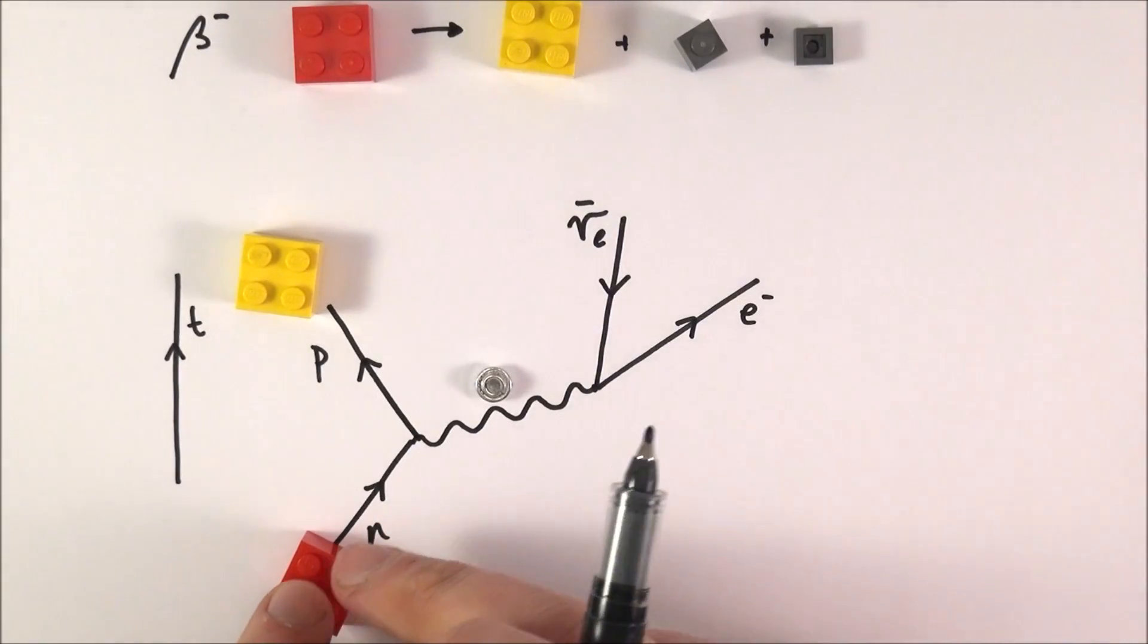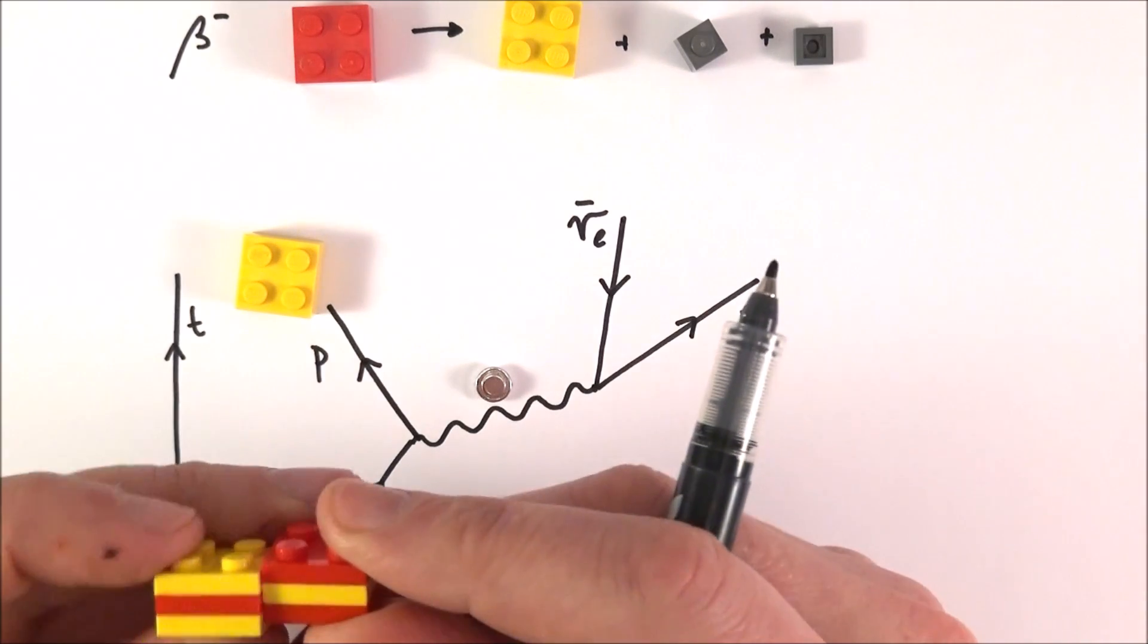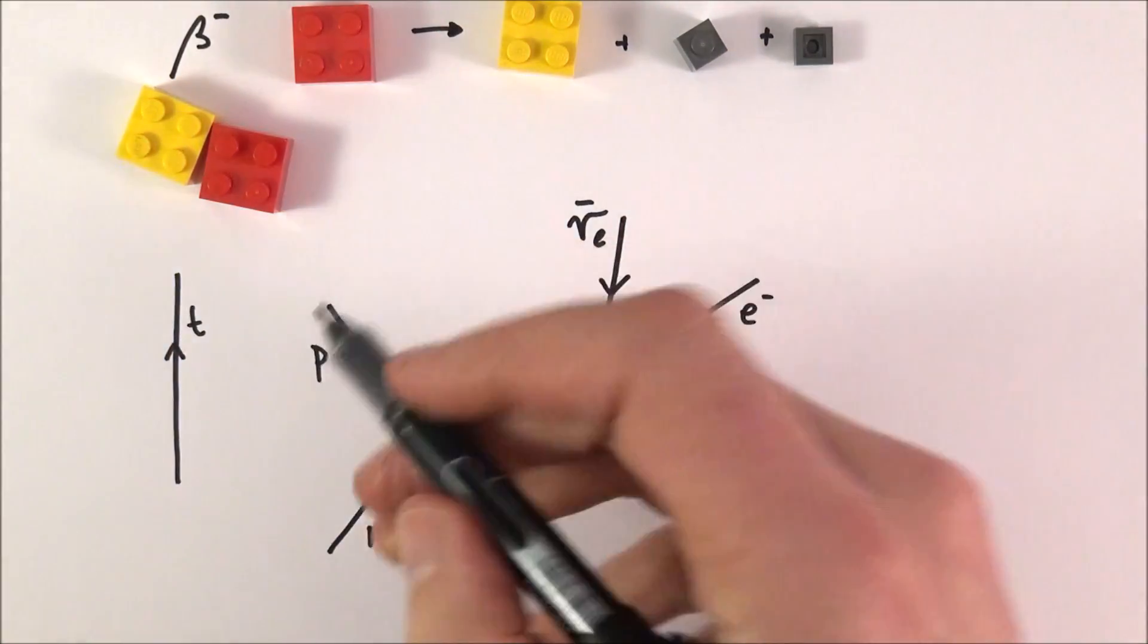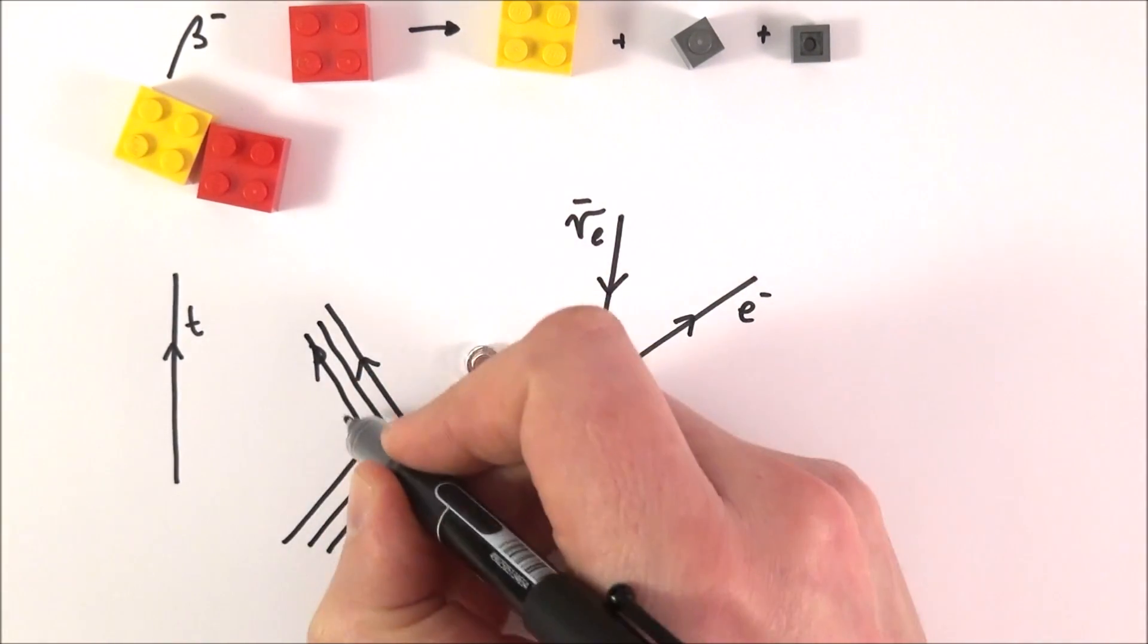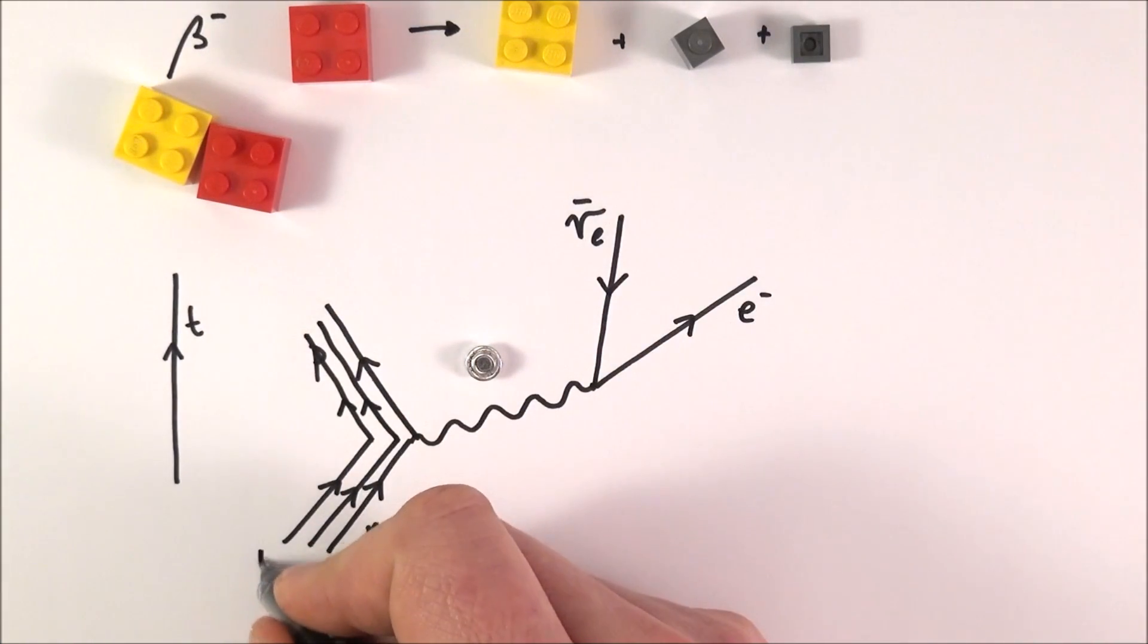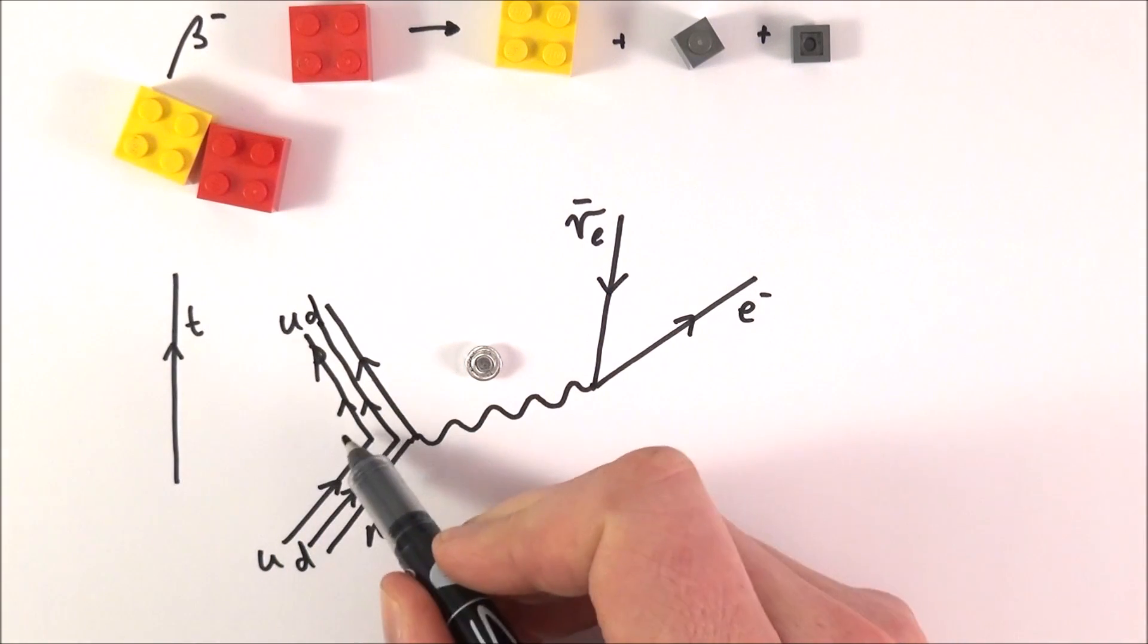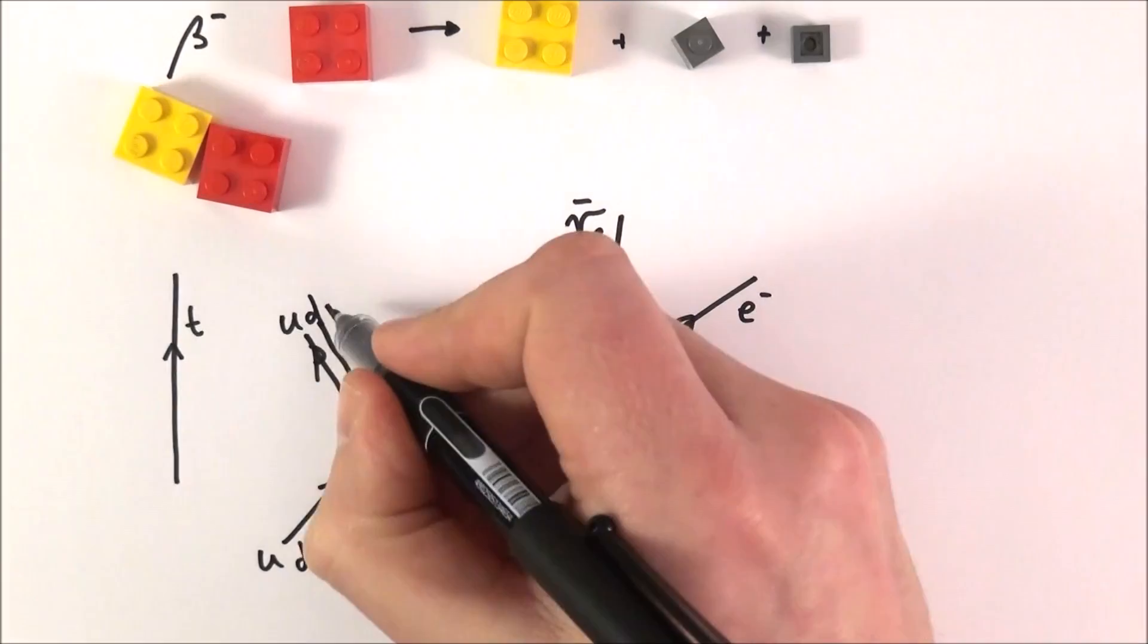Remember, when we have this neutron turned into a proton, two of the quarks inside don't actually change. The up and the down stay the same, and it's only really a down quark changing to an up quark. So we can also think about this, maybe rather than just the protons and neutrons, we can draw a couple more lines in. At the bottom, this one here could represent maybe an up quark, and then it comes out as an up quark after the reaction. A down quark goes in and it comes out as a down quark. So these two things don't actually take part in the reaction.